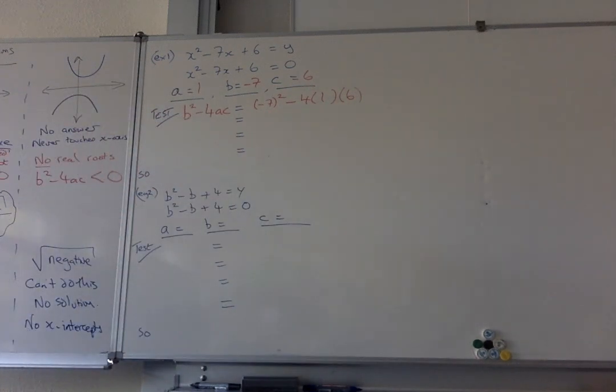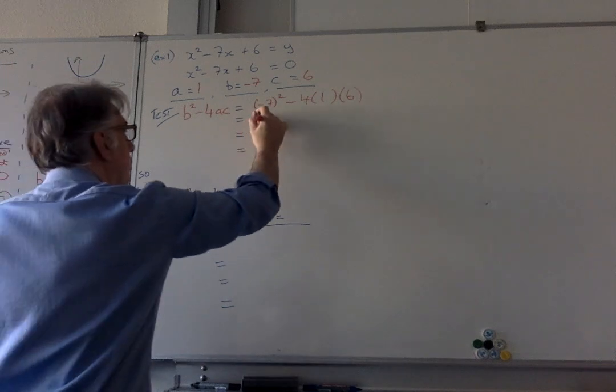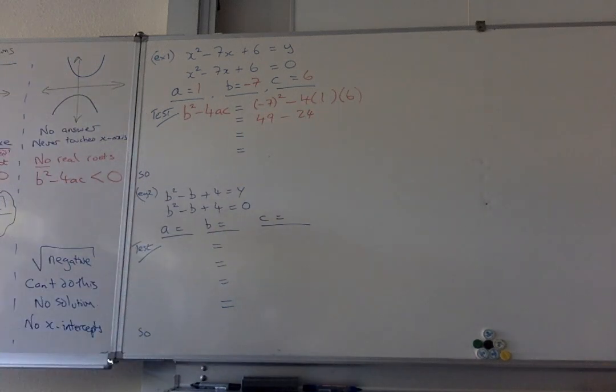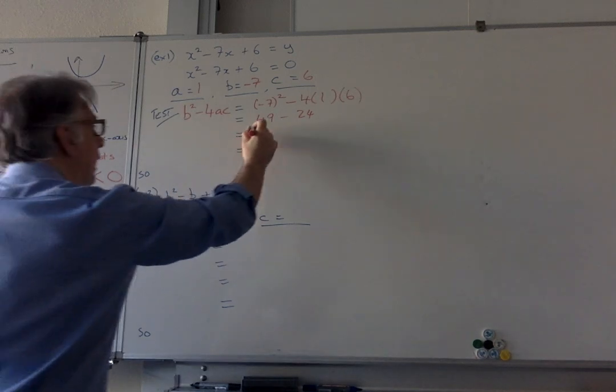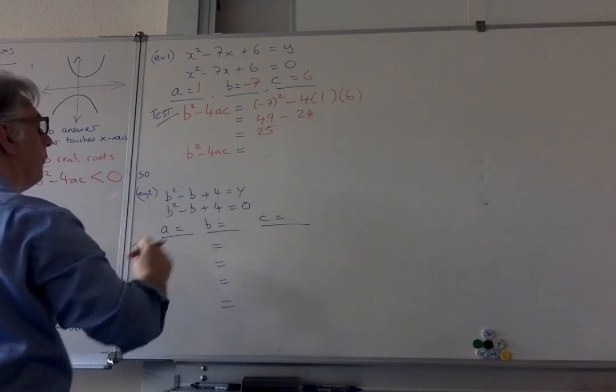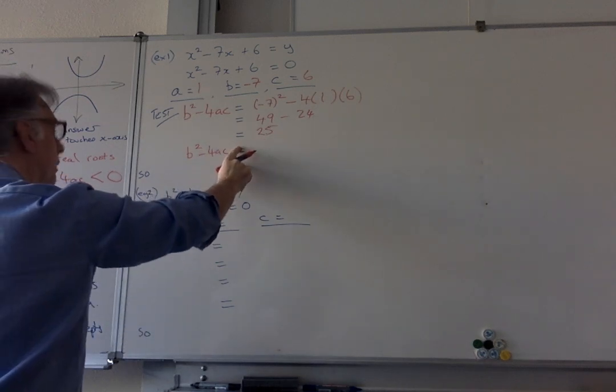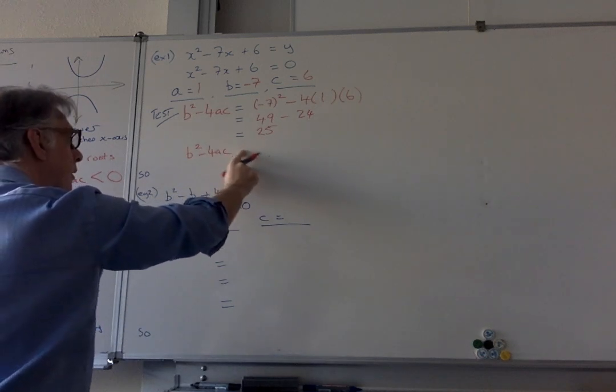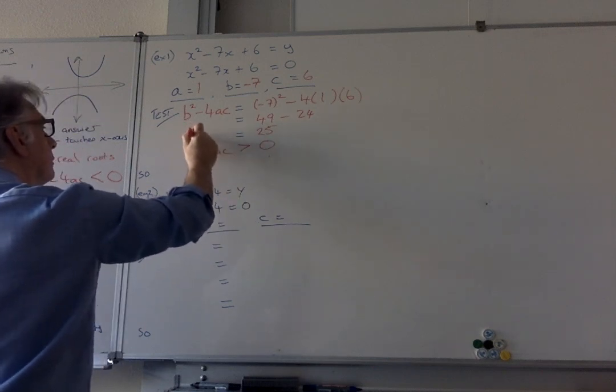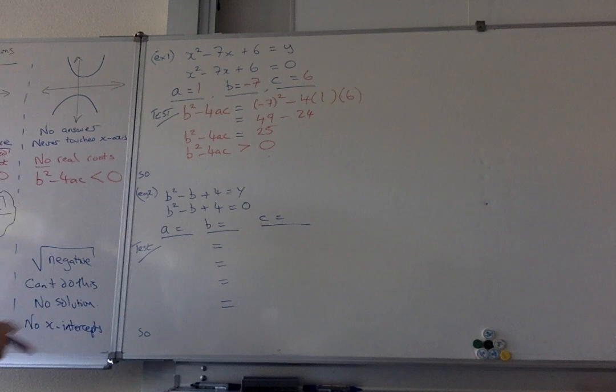And then it's just a question of doing your number work. So this of course is 49, this of course is minus 24. You read that, you do what it says, you get 25. Now we're comparing this to b squared minus 4ac. And what you notice, this is 25. So this means that b squared minus 4ac is greater than zero. And if b squared minus 4ac is greater than zero, what does that mean?